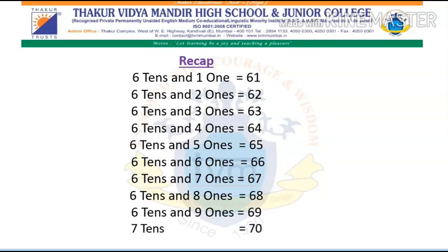Six tens and six ones is equal to 66. Six tens and seven ones is equal to 67. Six tens and eight ones is equal to 68. Six tens and nine ones is equal to 69. Seven tens is equal to 70.